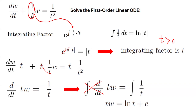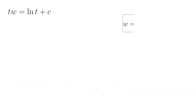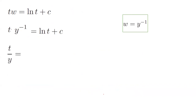The next step is to eliminate w. Since t·w equals ln(t) plus C, and w equals 1/y, substitute to get t times (1/y) equals ln(t) plus C, i.e., t/y equals ln(t) plus C. Solving for y gives y equals t divided by (ln(t) plus C).